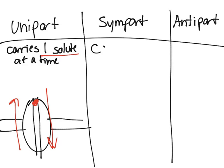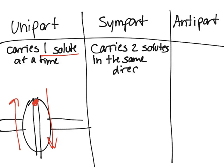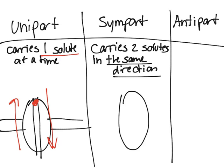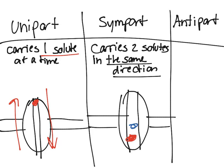Symport carries two solutes in the same direction — that's important. So if we have a protein here, the channel could carry two things: let's say something in red and another solute in blue, going in one direction, either in or out.